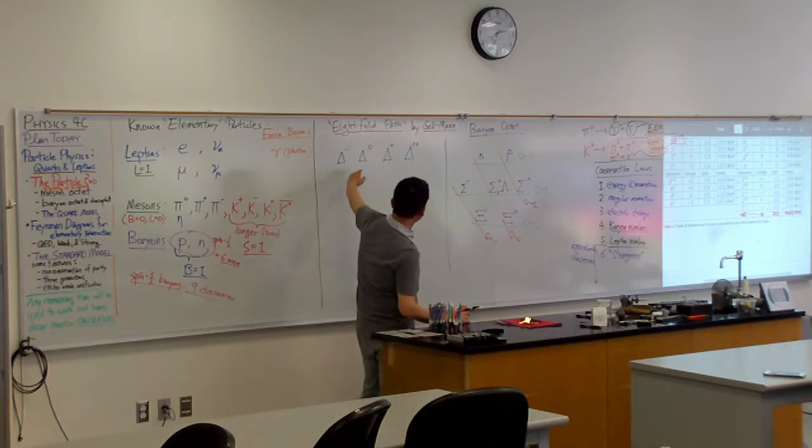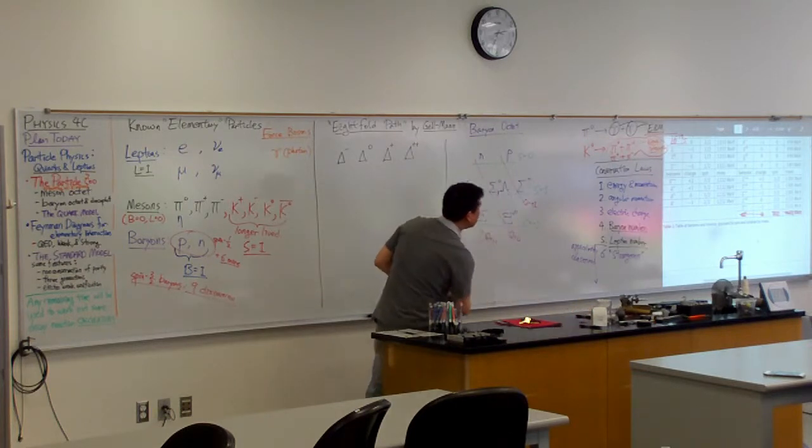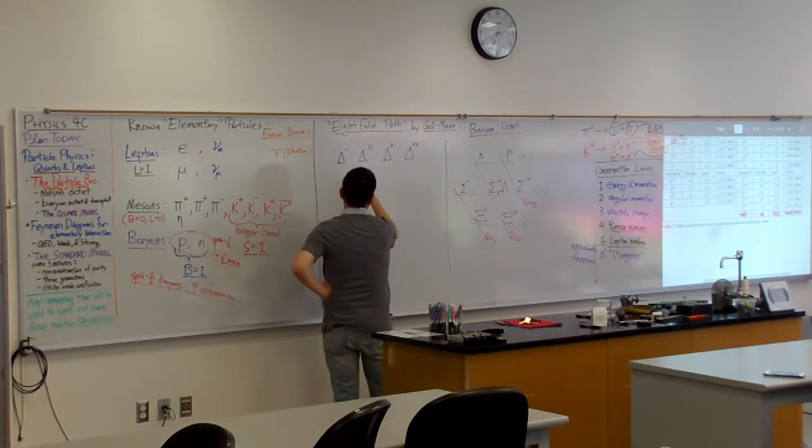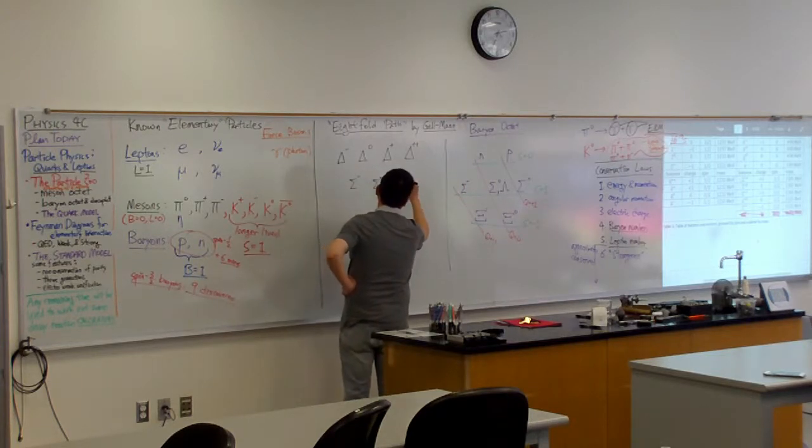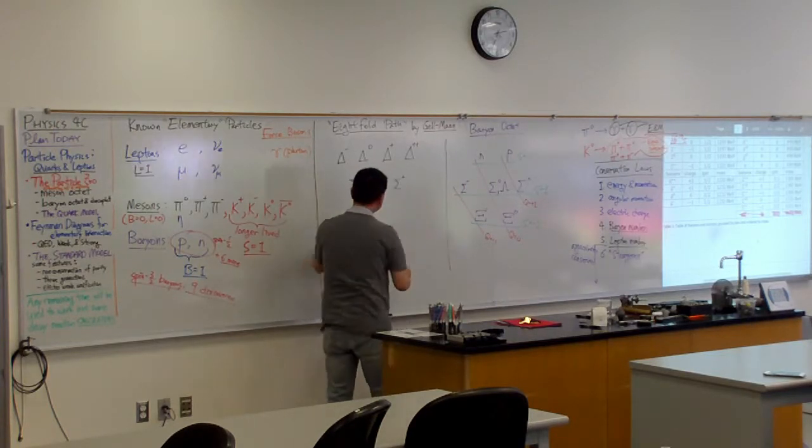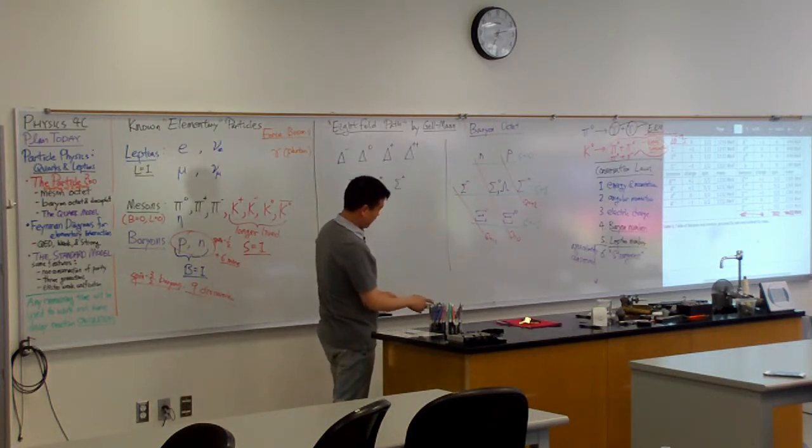You have, and on the next row, this is the next set of particles, they're now slightly heavier. You have sigma minus, sigma zero, sigma plus. There's technically an asterisk there to indicate it's different from this, but I'm going to skip it in the interest of time.